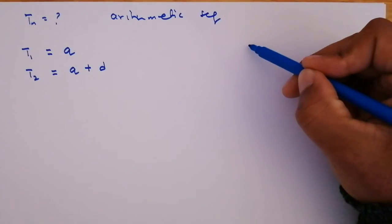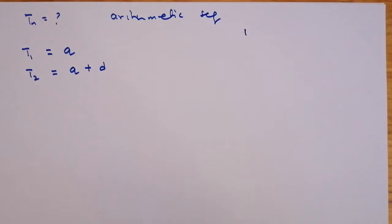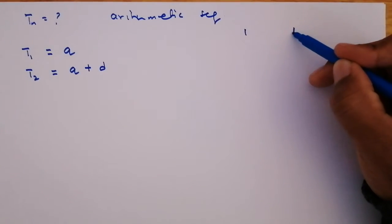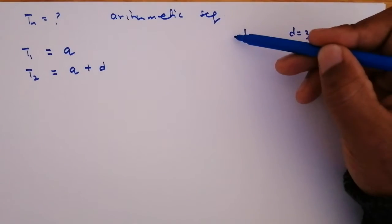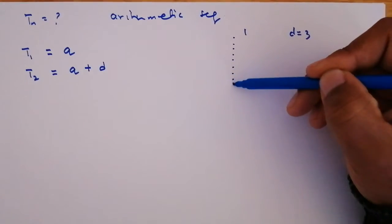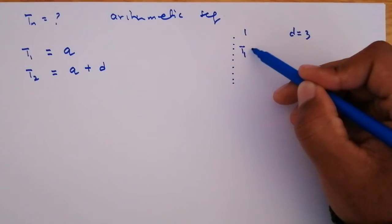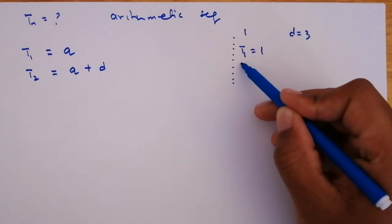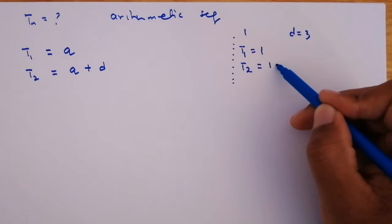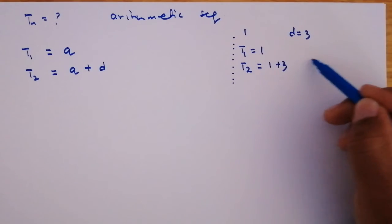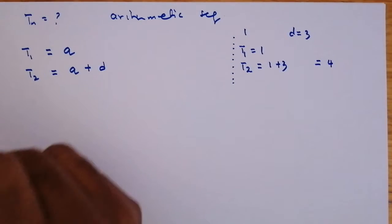Let me do an example on the side. Let's say the first term of a sequence was 1 and d was 3. So T1 equals 1. To get T2, that is going to be 1 plus 3, so T2 will be 4.